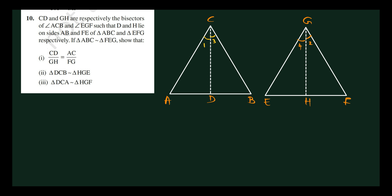Triangle ABC is similar to triangle FEG, such that CD by GH equals AC by FG, and triangle DCB is similar to triangle HGE, and triangle DCA is similar to triangle HGF. Since ABC is similar to FEG, corresponding angles are equal: angle B equals angle E, angle C equals angle G.